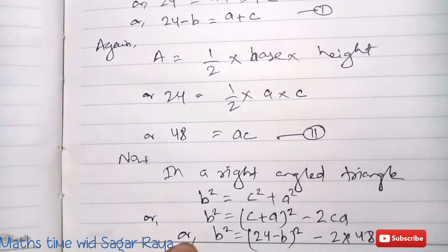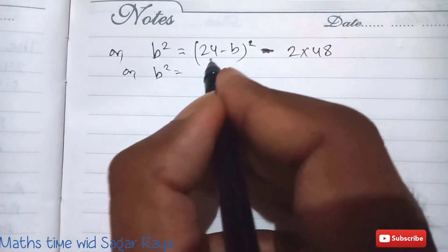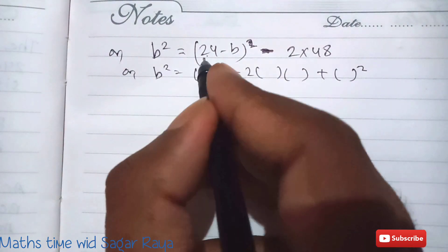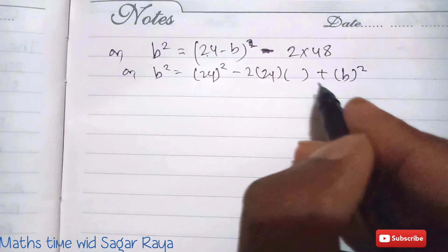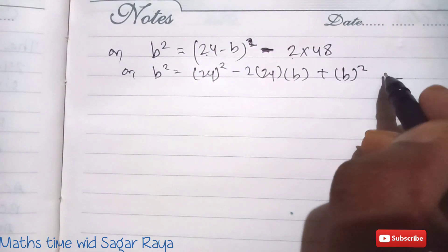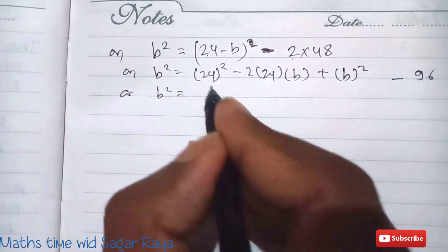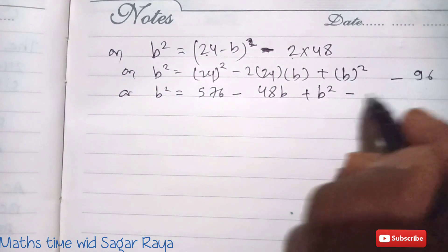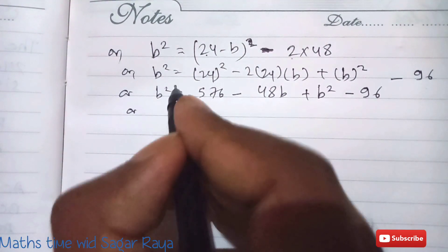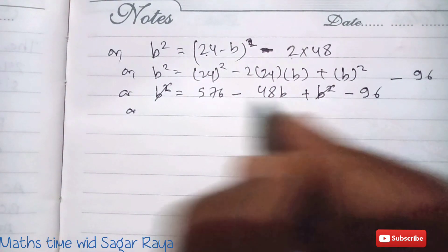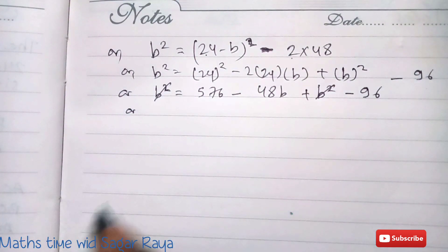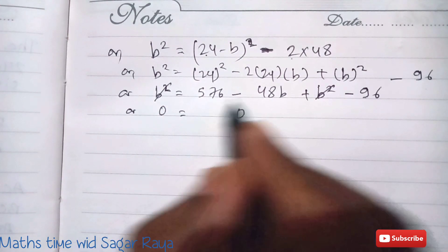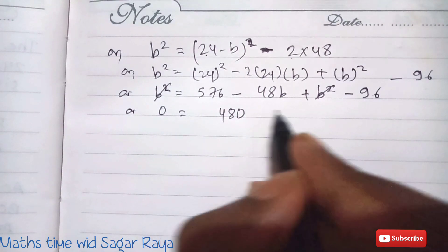Expanding (24 − b)² using a² − 2ab + b²: b² = 576 − 48b + b² − 96. The b² terms appear on both sides and cancel. This gives: 0 = 576 − 96 − 48b, which simplifies to 0 = 480 − 48b.